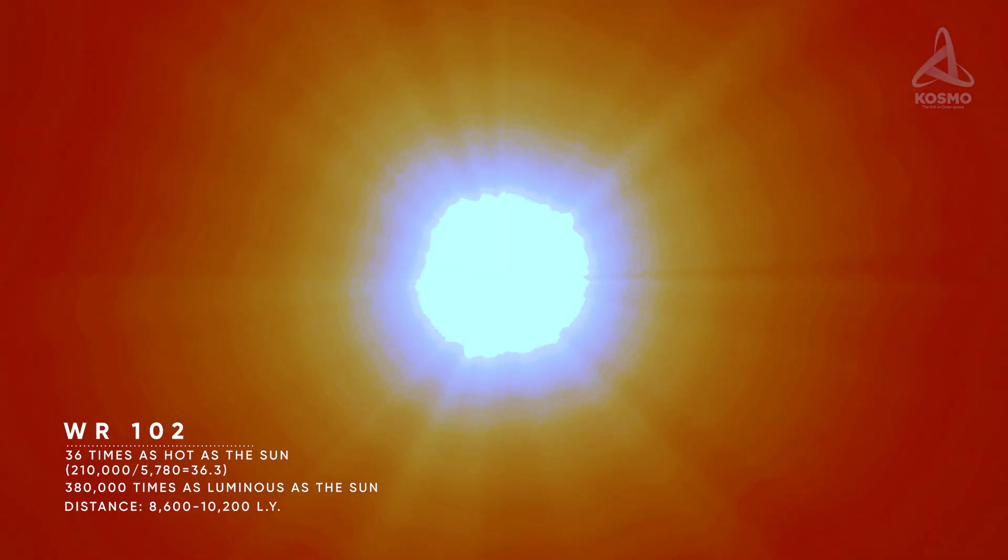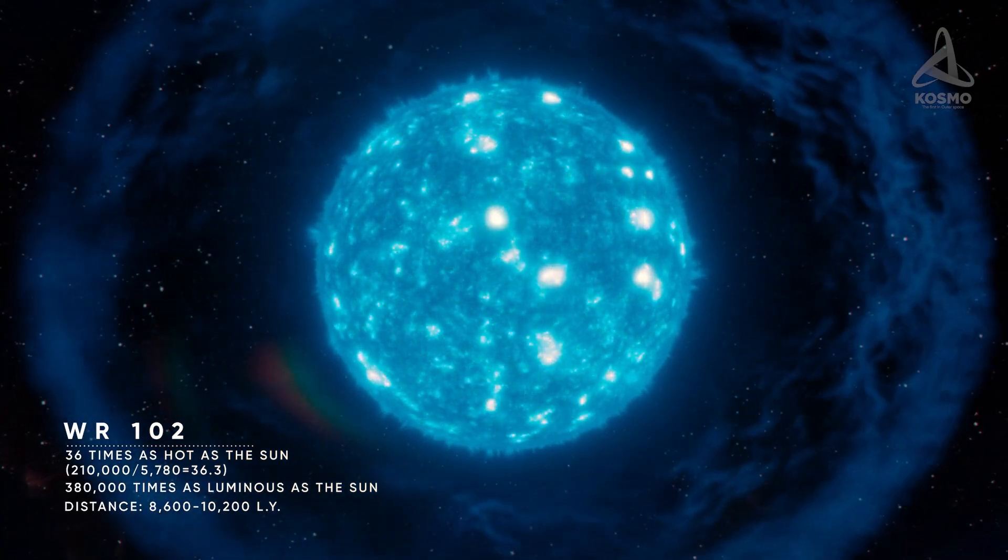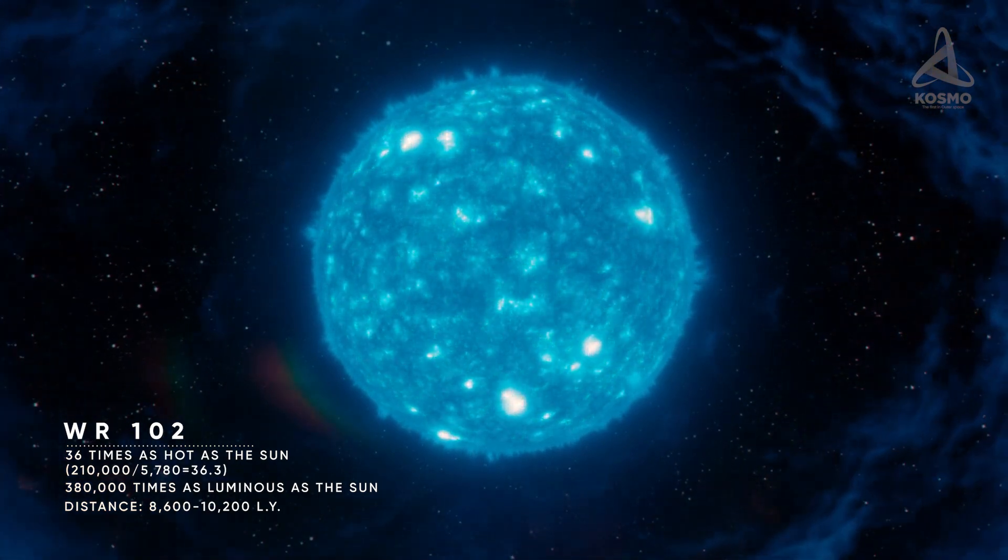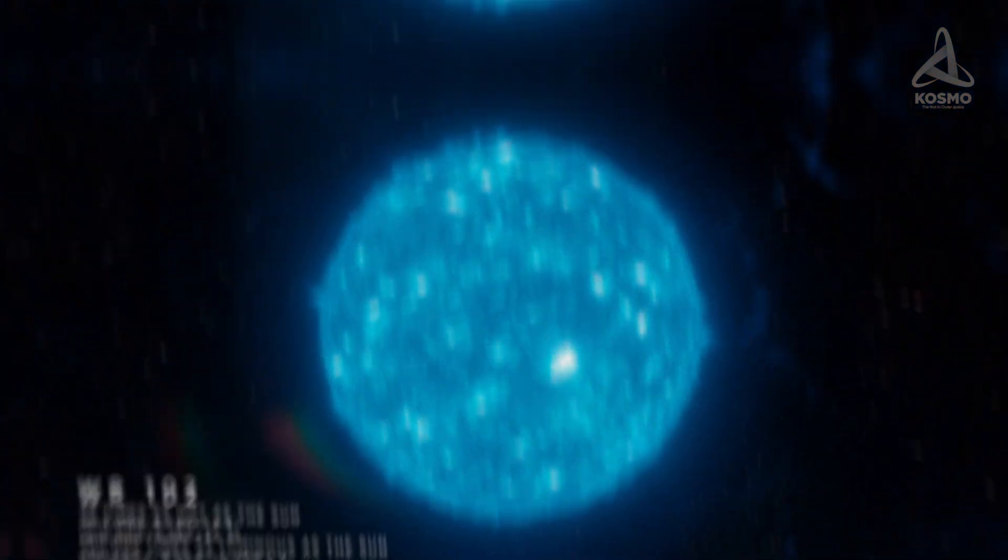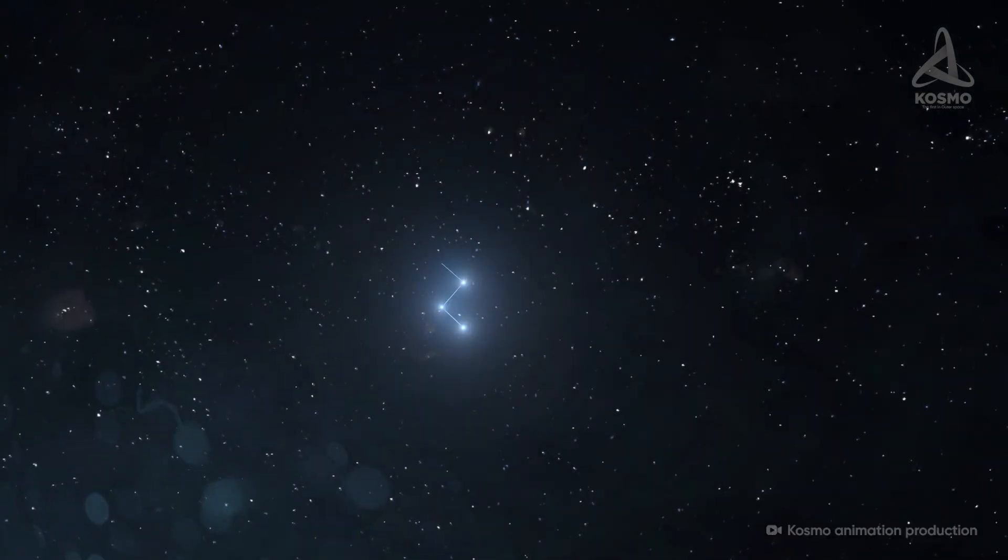The luminosity of this scorching hot object is unbelievable. It is estimated at over 380,000 times that of the Sun. WR102 lies about 10,000 light-years away. The star is located in the part of the sky with the constellation Sagittarius.